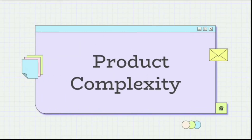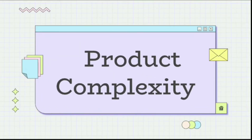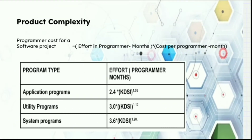Product Complexity: The effort required to develop complex software is high and hence the cost will be more. A large software product is more expensive to develop than a smaller one. The rate of increase in required effort grows with the number of source instructions at an exponential rate slightly greater than one.